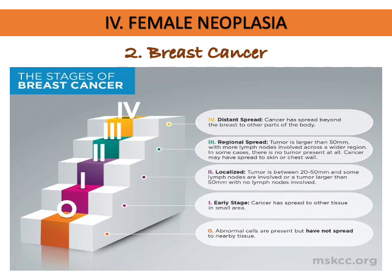Staging refers to how far the cancer has spread from the area of origin, while grading refers to how abnormal the cells appear.